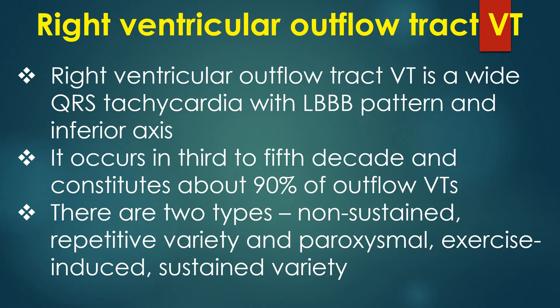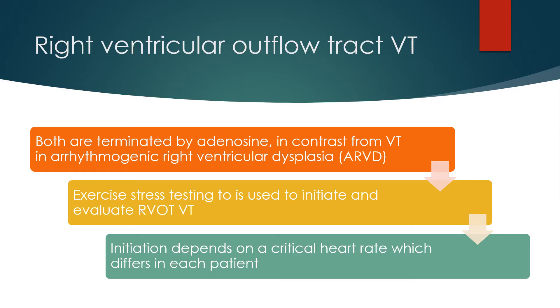Right ventricular outflow tract VT is a wide QRS tachycardia with LBBB pattern and inferior axis. It occurs in the 3rd to 5th decade and constitutes about 90% of outflow VTs. There are two types: a non-sustained repetitive variety and a paroxysmal exercise-induced sustained variety. Both are terminated by adenosine, in contrast to VT in arrhythmogenic right ventricular dysplasia. Exercise stress testing is used to initiate and evaluate RVOT VT.